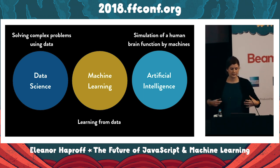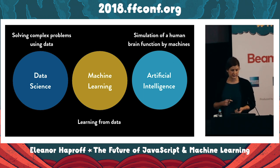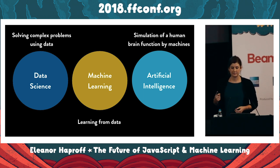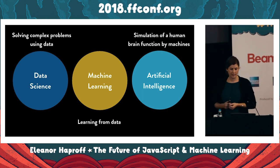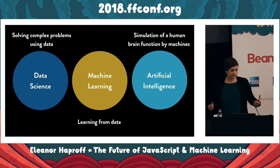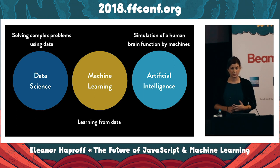Data science generally is solving complex problems using data. This could cover things such as analytics, mining, visualization, statistics, and more. Artificial intelligence is the simulation of a human brain function by machines. This would cover perception — vision, touch, hearing — actions and movements such as robotics, natural language processing including speech and text, planning such as playing chess and predicting moves, and reasoning and knowledge, for example IBM Watson playing the quiz show Jeopardy.